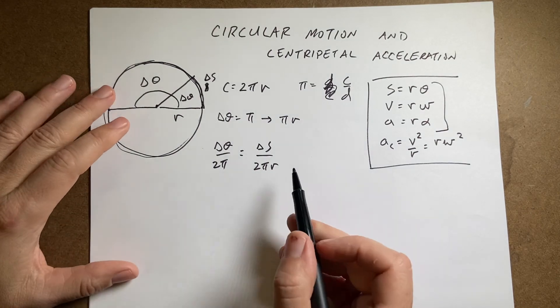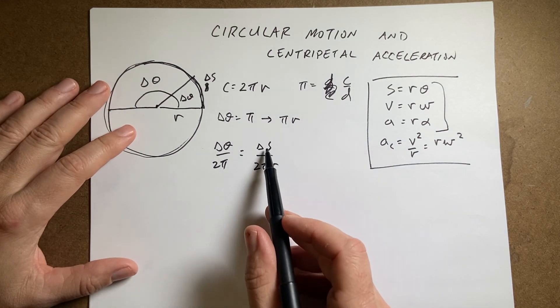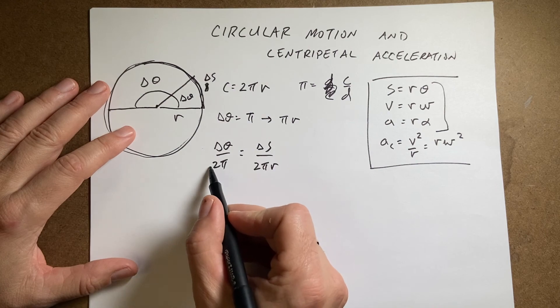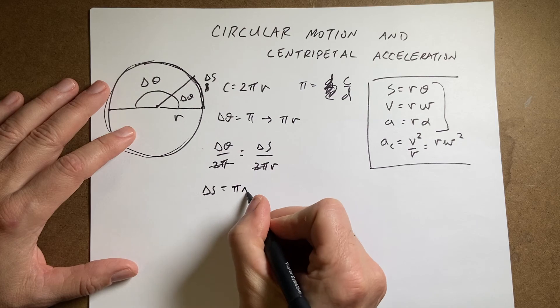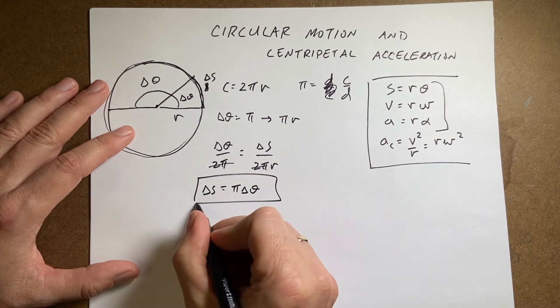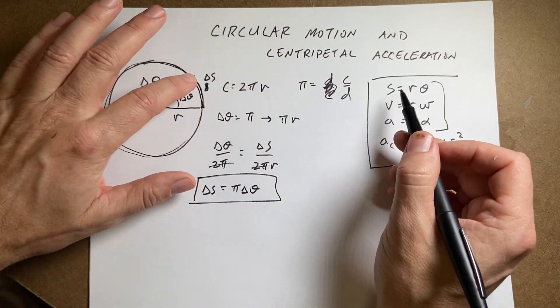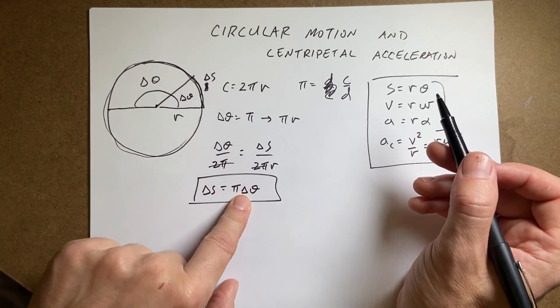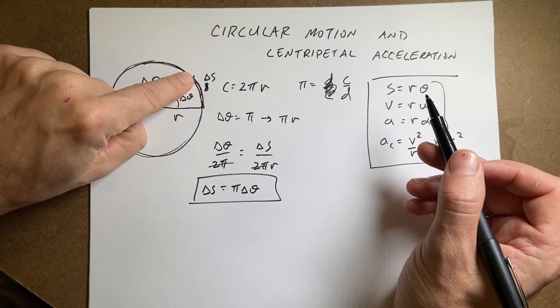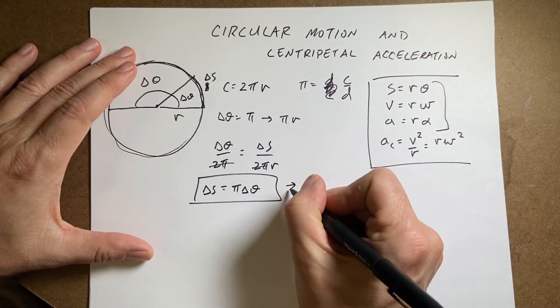So from this, I can solve for delta s. And the 2π's cancel, and I get delta s equals r delta theta. Because now if I had to say any distance s, it's the angle that it subtends times r. And this is the definition of an arc length.